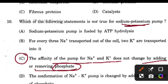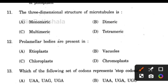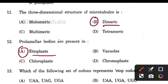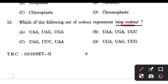Next question: the three-dimensional structure of microtubules is dimeric. Next question: prolaminar bodies are present in etioplasts — option number A. Next question: which of the following set of codons represent the stop codons? That is UAA, UAG, and UGA — these three are the stop codons.